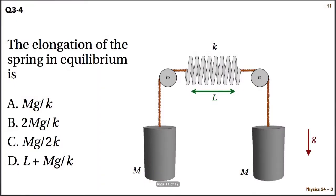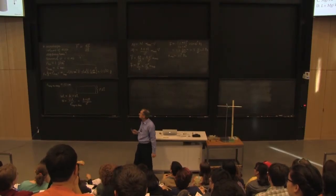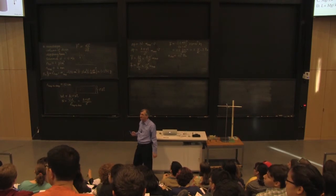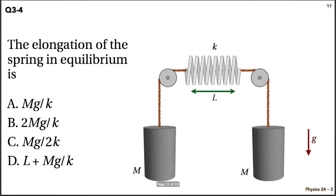So this one is pulling up on the mass at mg. Then it goes over to pulley. What's the pulley doing? Nothing. It changes the direction of the force. Is it true that the tension on this side is the same as the tension on that side? So the tension on this side of the spring is mg. The tension on that side of the spring is mg. Therefore, the elongation of the spring is mg over k. So the answer is A.